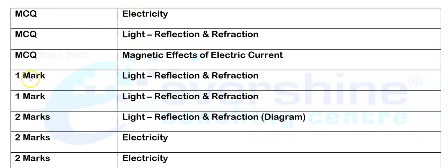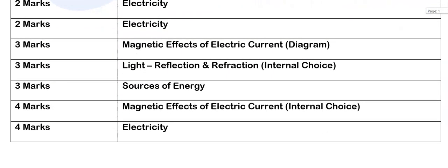Coming back to the 1-mark questions: the first question is from light, and the next 1-mark is also from the chapter light. Then a 2-mark question has been asked from the chapter light, followed by a 2-mark question from electricity, and one more 2-mark question also from electricity. Then the 3-mark question is from magnetic effect of electric current — that is a diagram question.